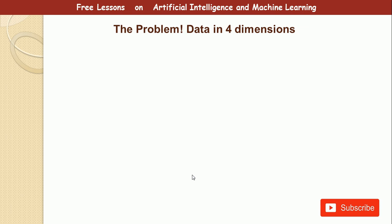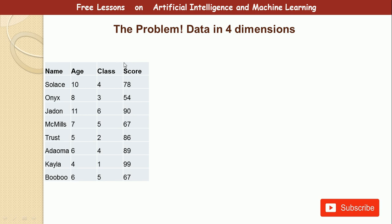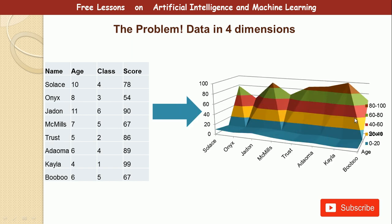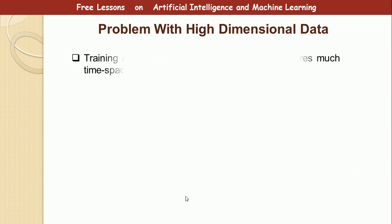Let's now take a look at data in four dimensions. I've added another column to the table called 'scores.' Now if we look at this data, it doesn't make much sense — although we can see the names, we cannot actually see the effects of age, class, and score together. The higher the dimension of the data goes, the more complex the visualization becomes and the more difficult it is to understand. Data is better visualized in three dimensions or less. That is the problem that principal component analysis tries to solve.